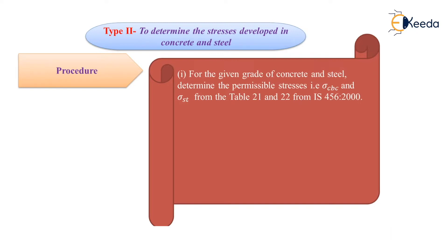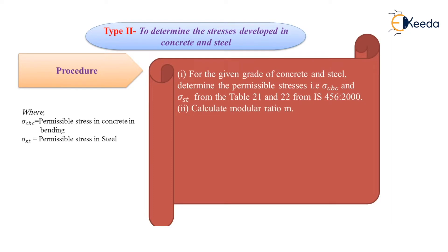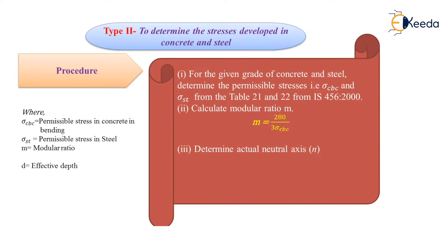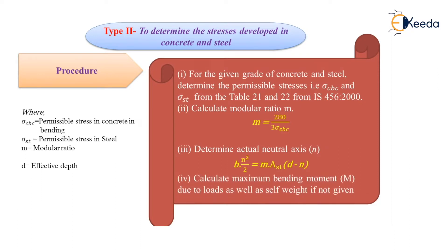The second step is to calculate modular ratio M. The formula is M is equal to 280 divided by 3 into Sigma CBC. The next step is to determine the actual neutral axis N. From the given equation, we can calculate the value of N, that is the actual neutral axis.